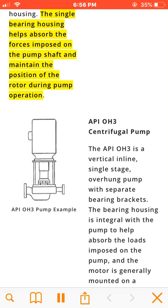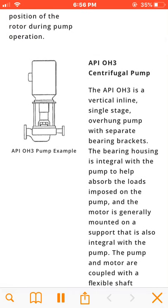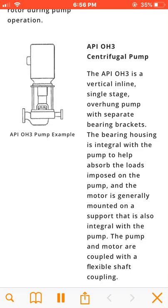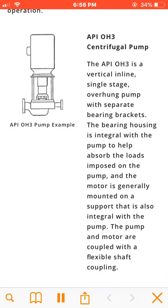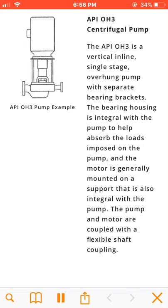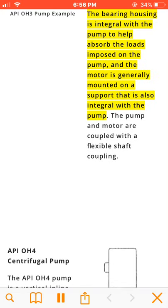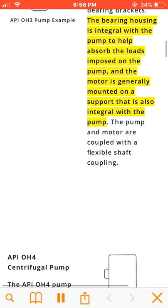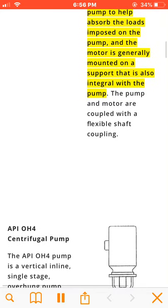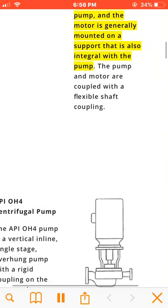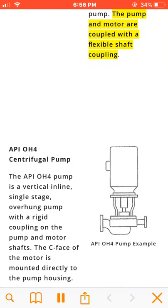The API OH3 is a vertical inline, single-stage, overhung pump with separate bearing brackets. The bearing housing is integral with the pump to help absorb the loads imposed on the pump, and the motor is generally mounted on a support that is also integral with the pump. The pump and motor are coupled with a flexible shaft coupling.